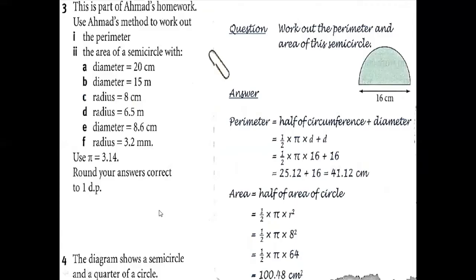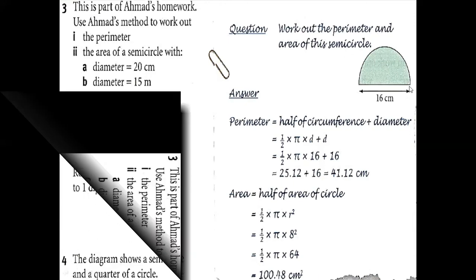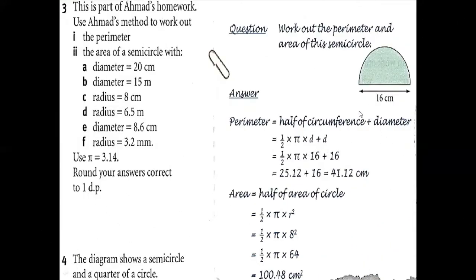Now let's talk about question three. Perimeter here means the same as circumference for a full circle — it's the length of the outer boundary. We use the word 'perimeter' rather than 'circumference' because here we have a semicircle. For a full circle, circumference is just the outer layer, but for a semicircle, you divide the circumference by 2 to get the curved part, and then you also add the diameter — that straight edge of 16.